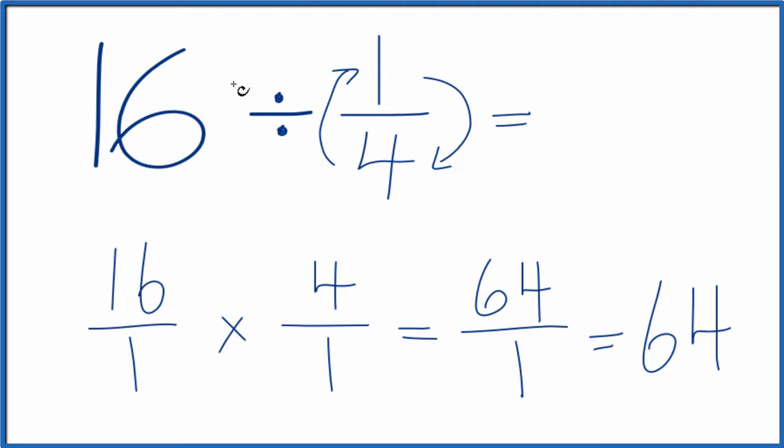So 16 divided by 1 fourth gives us 64. If you were to take 64 and multiply it by 1 fourth, you'd get 16. So we did this correctly.